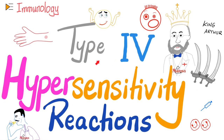Hey guys, it's Medicosis Perfection — it is where medicine makes perfect sense. Let's continue our immunology discussion. In the last videos, we talked about type 1, type 2, and type 3 hypersensitivity reactions. Today we'll talk about type 4. Unlike the previous three types, type 4 has nothing to do with antibodies. Type 4 is cell-to-cell killing, cell-mediated immunity. That's why the hero here is the T lymphocyte.